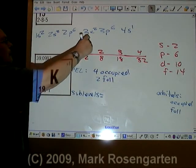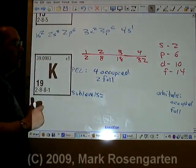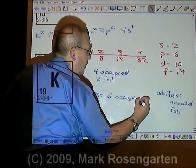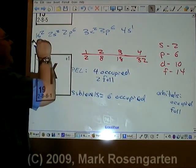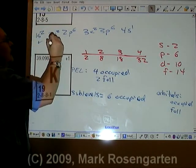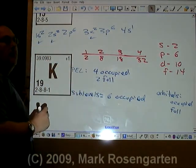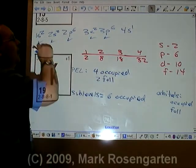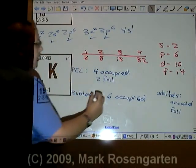Now we have 1, 2, 3, 4, 5, 6 sublevels occupied. S needs two to fill it. P needs six to fill it. That one's not full. So only five sublevels are full.